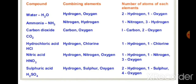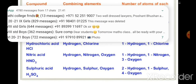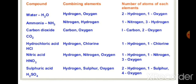Let's see some more examples. Water is H2O: two hydrogen and one oxygen. Ammonia is NH3: one nitrogen and three hydrogen. Carbon dioxide is CO2: one carbon and two oxygen. Hydrochloric acid is HCl: one hydrogen and one chlorine. Nitric acid is HNO3: one hydrogen, one nitrogen, and three oxygen. Sulfuric acid is H2SO4: two hydrogen, one sulfur, and four oxygen.